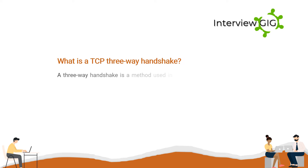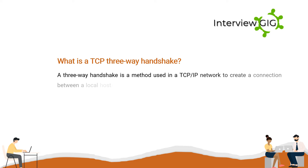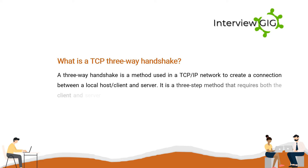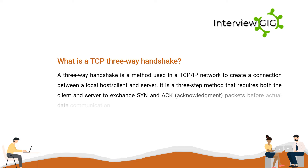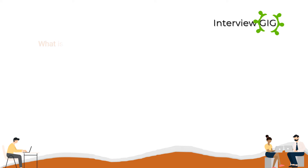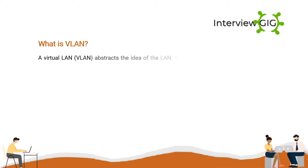What is a TCP three-way handshake? A three-way handshake is a method used in a TCP/IP network to create a connection between a local host/client and a server. It is a three-step method that requires both the client and server to exchange SYN and ACK (acknowledgement) packets before actual data communication begins.